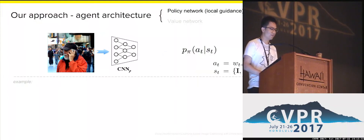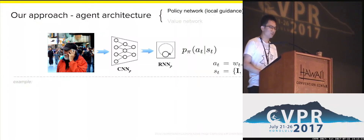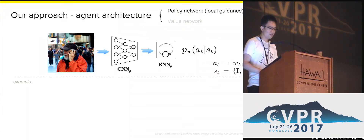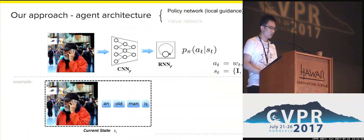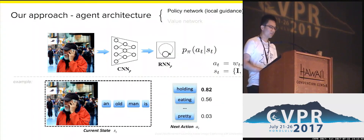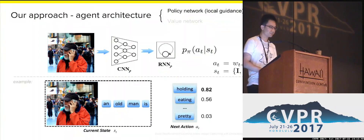We use a CNN followed by an RNN to provide such conditional probability. As we can see, this is exactly an encoder-decoder model. Given a current state, the probability distribution over our next action will be as shown.